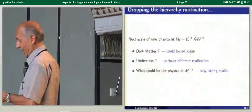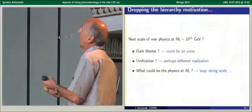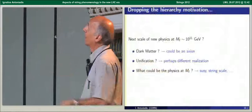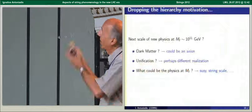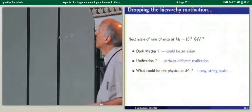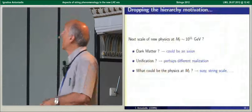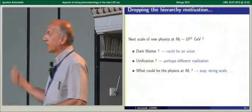Now dropping the hierarchy motivation and say, what could it be that the next scale of physics is at the intermediate scales? I don't see anything wrong with that. Dark matter could be an axion. Unification perhaps could be realized in a different way. There have been proposals with such a possibility. What could be the physics at this intermediate scale could be supersymmetry, could be string scale, could be any theory that could make the Higgs potential stable if we take this point of view.